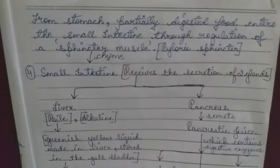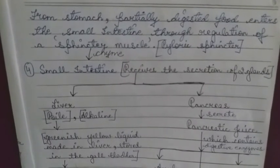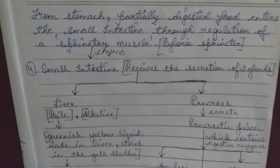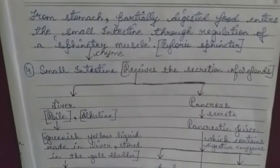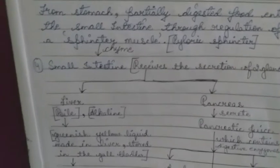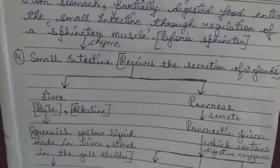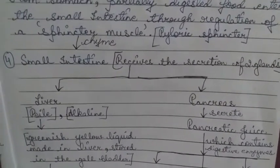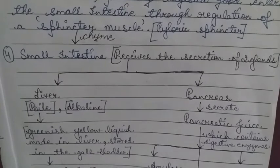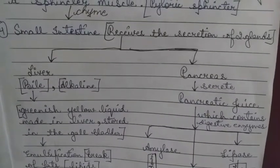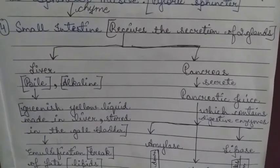Moving further, the partially digested food from the stomach passes into the small intestine through the pyloric sphincter. This partially digested food, mixed with gastric juices, is called chyme. The chyme from the stomach has now reached the small intestine.